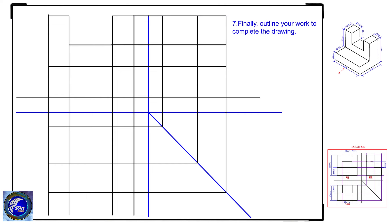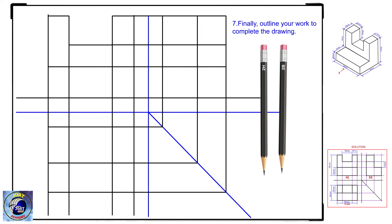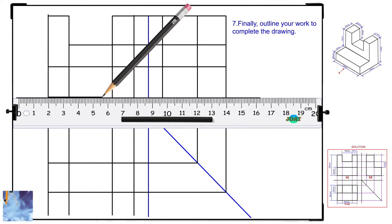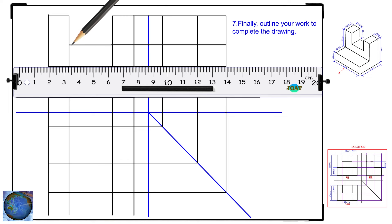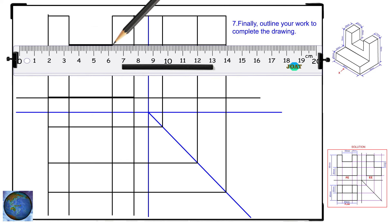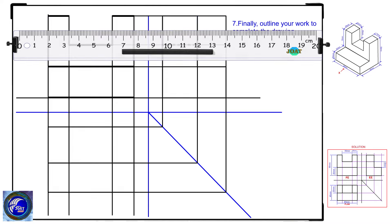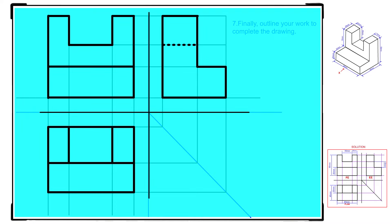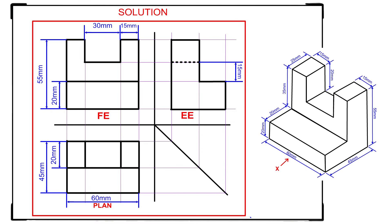Step 7: Finally, outline your work to complete the drawing. This is how to draw the orthographic view of an object using first angle projection.